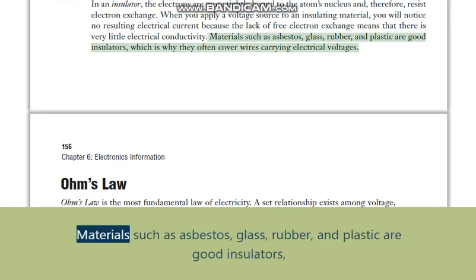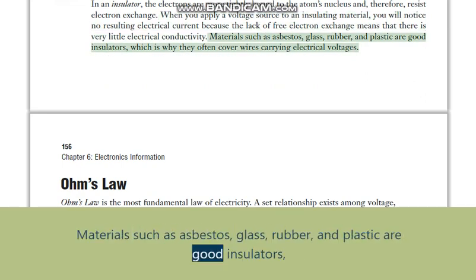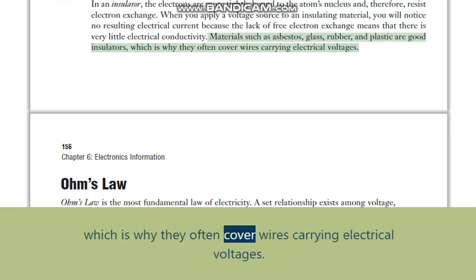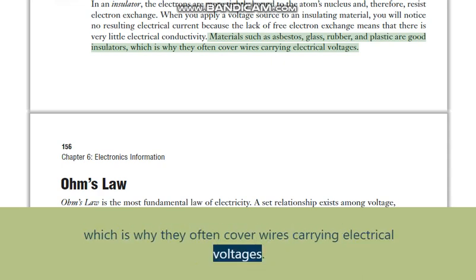Materials such as asbestos, glass, rubber, and plastic are good insulators, which is why they often cover wires carrying electrical voltages.